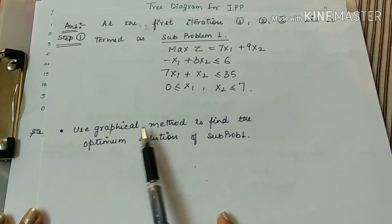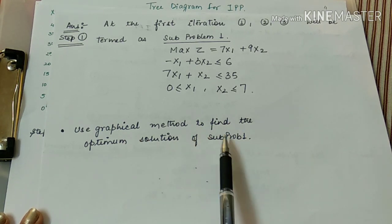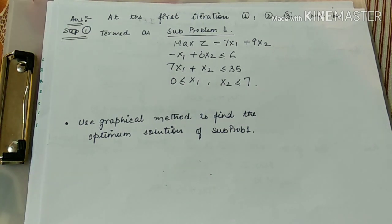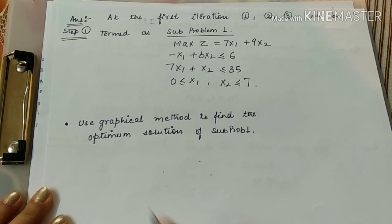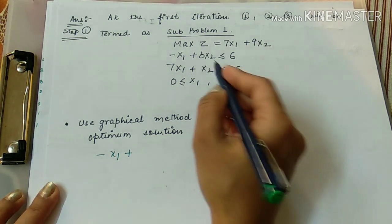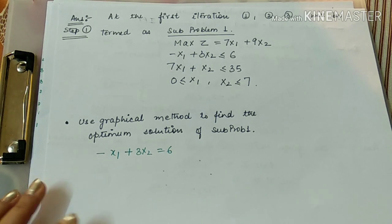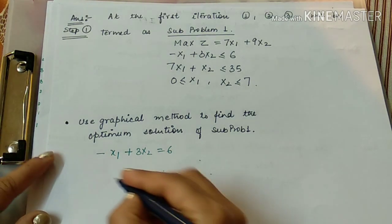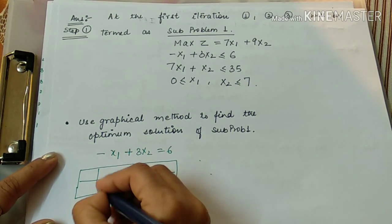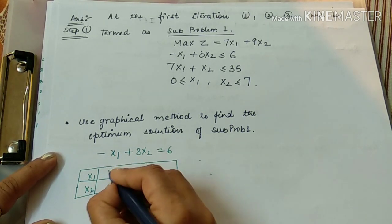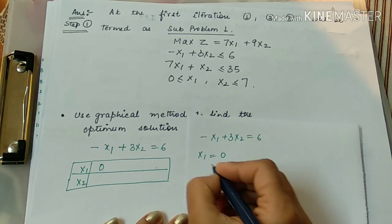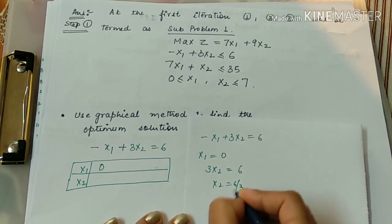For the graphical method we have to find the values of x1 and x2. Writing the first constraint in equation form: minus x1 plus 3x2 equals 6. To get the values: putting x1 equal to 0, we get 3x2 equals 6, so x2 equals 2.